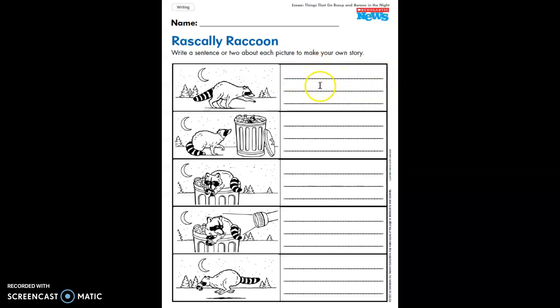You're to write one or two sentences for each picture. So one or two sentences here, one or two here, one or two here, one or two here. You should have a total of five to ten sentences. And when read all together, they'll tell the story of what this rascally raccoon is doing.